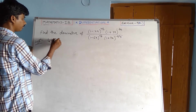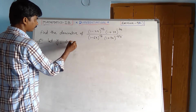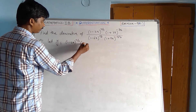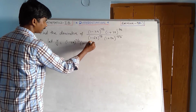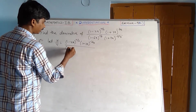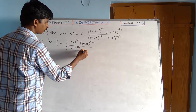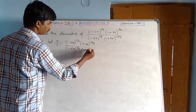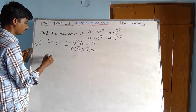Solution. Let y equal to (1 minus 2x) to the power of 2/3, times (1 plus 3x) to the power of minus 3/4, divided by (1 minus 6x) to the power of 5/6, times (1 plus 7x) to the power of minus 6/7. Taking log on both sides.